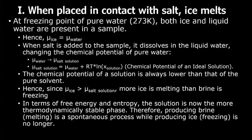The chemical potential of a solution is always lower than that of a pure solvent. In other words, mu of ice is now greater than mu of salt solution and the two phases are no longer at diffusive equilibrium. Therefore, the net flow of particles is now non-zero across the phase boundary. Ergo, more ice is melting than brine is freezing.